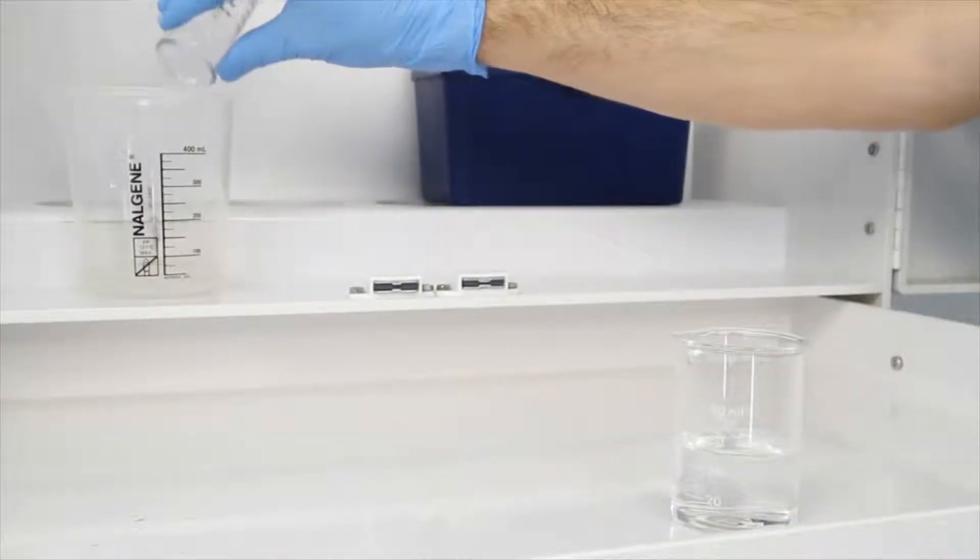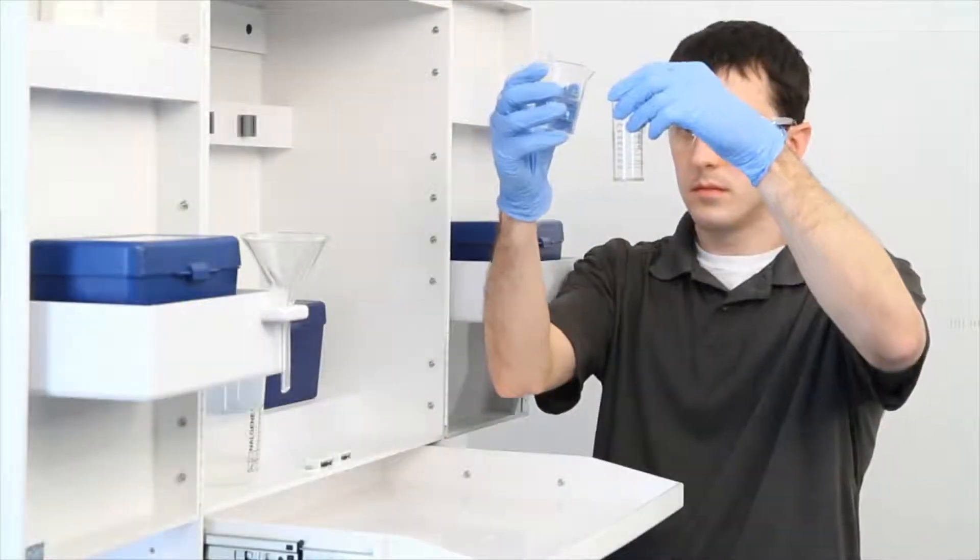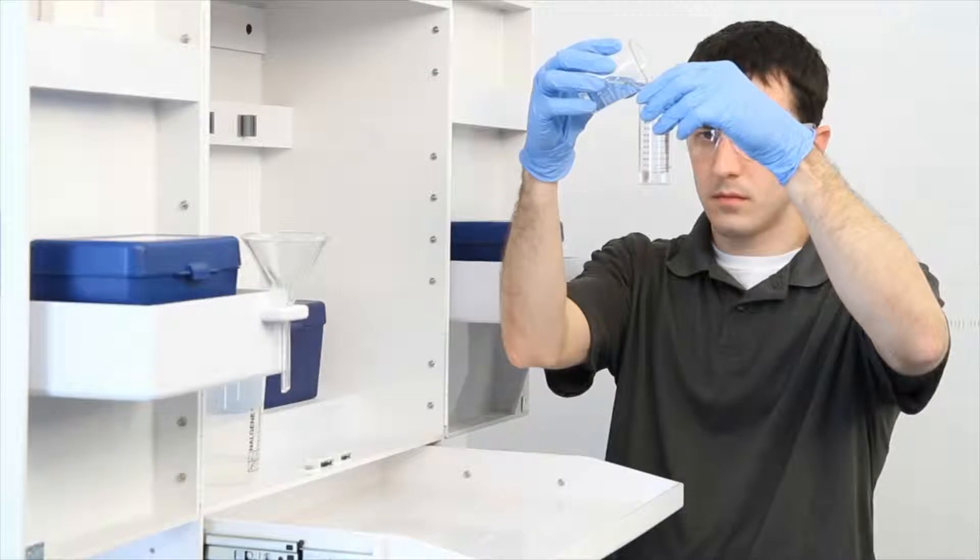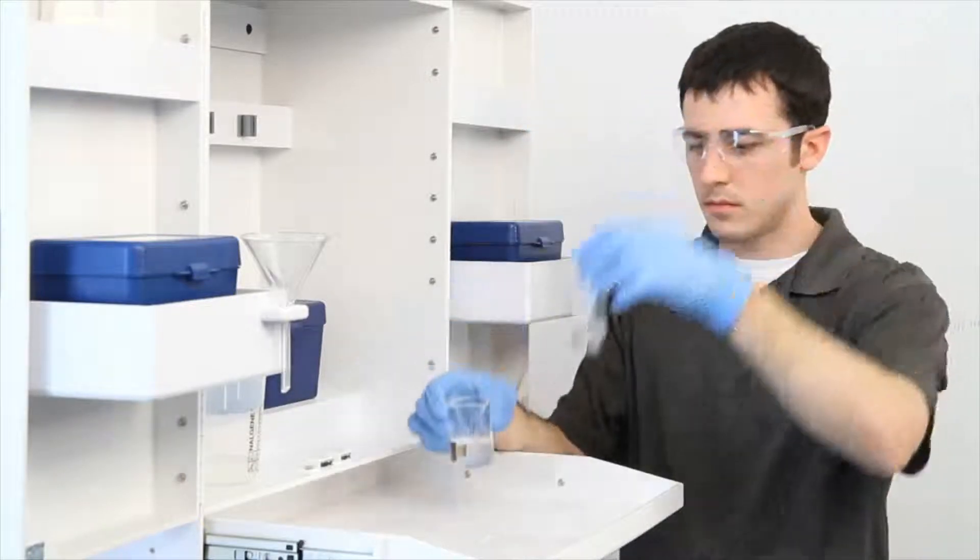To get an accurate sample size, hold the vial close to eye level. Once you feel you have an accurate sample, place the vial on a level surface and bend down to eye level.